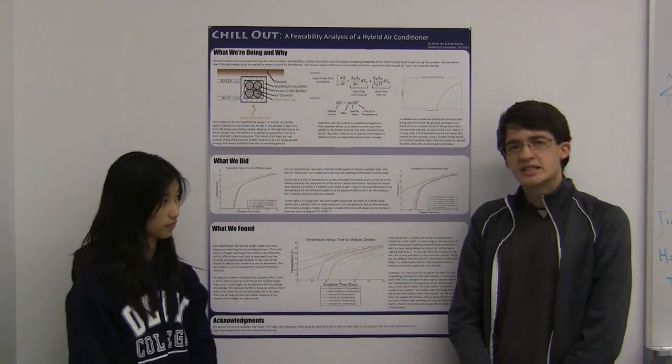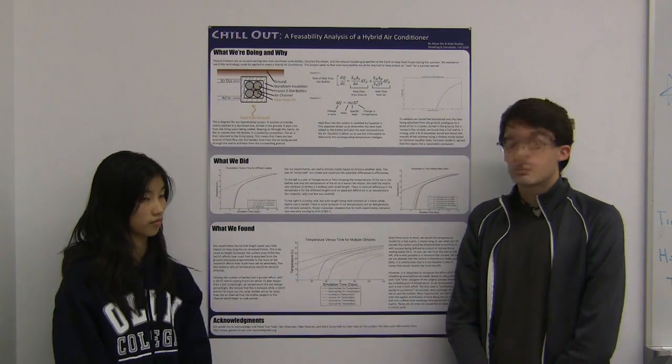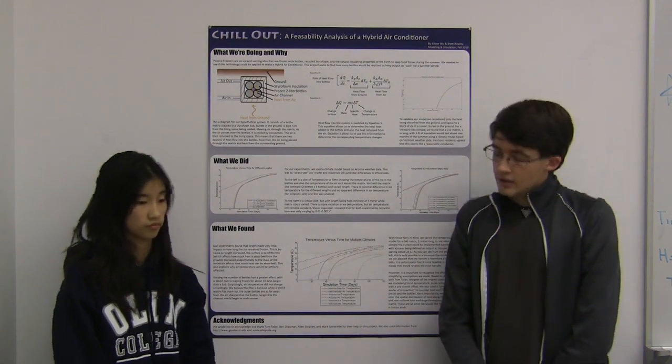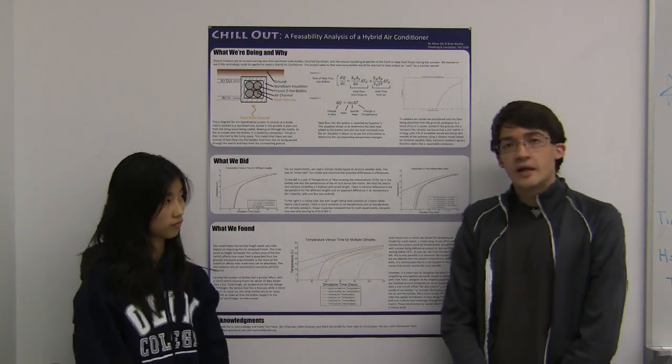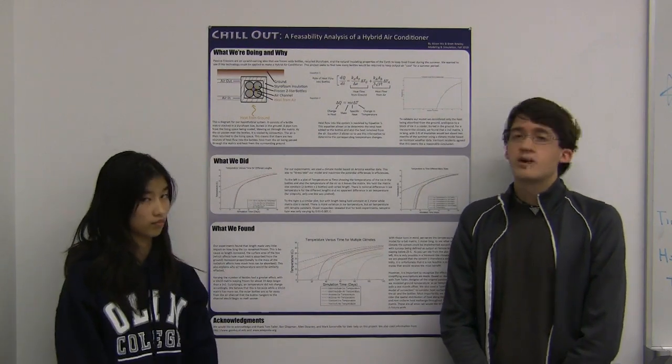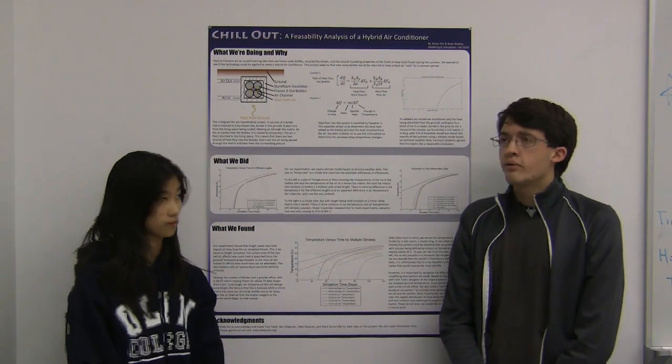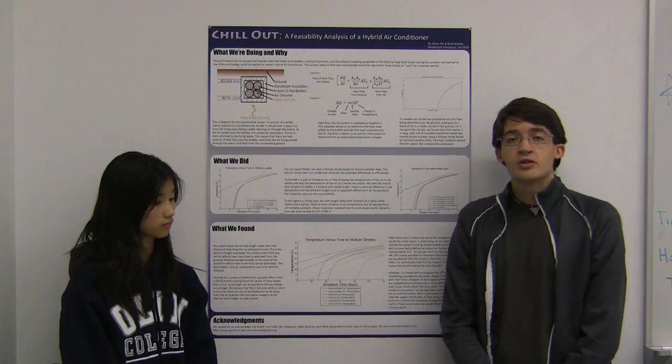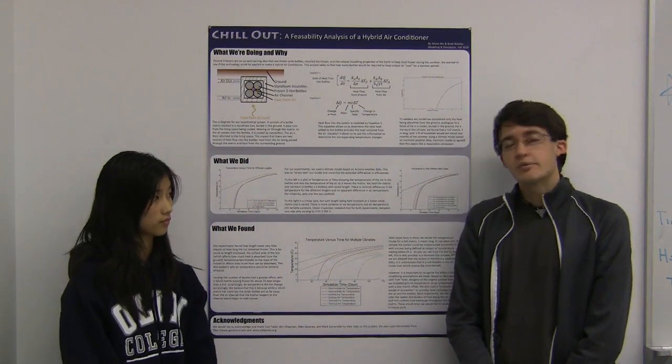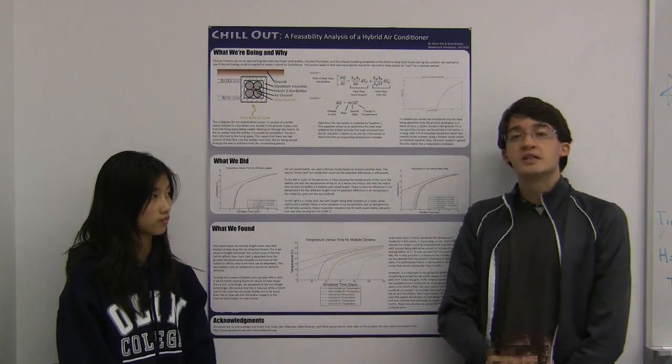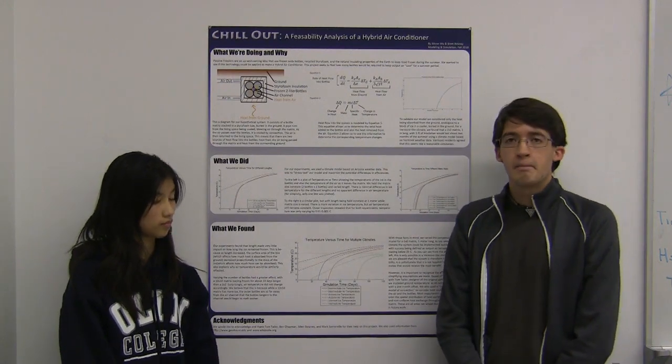We believe that this is because of a limiting factor on how quickly heat can diffuse through the ice matrix. A larger matrix does have more ice, but each additional bottle is farther away from the air channel. Therefore, while a larger matrix may be cooler at a given time, the temperature of the bottles closest to the air channel itself is about the same.